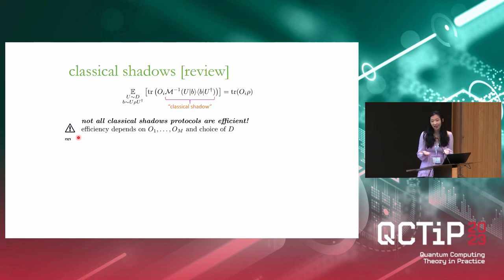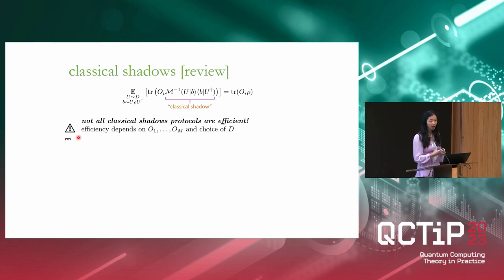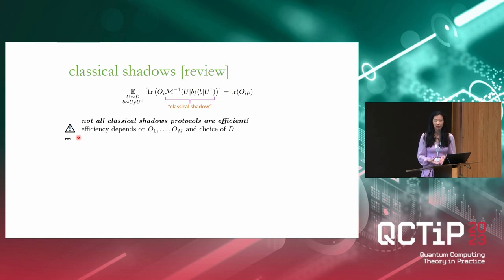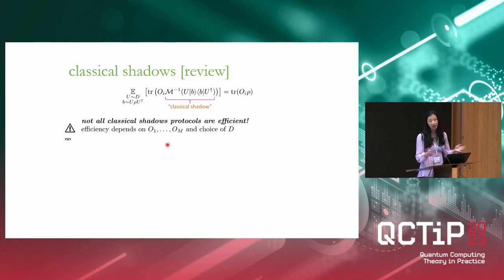That's the basic classical shadows framework — it's pretty straightforward, but of course it's not a silver bullet. In addition to the practical drawbacks that Richard pointed out yesterday for his particular distribution, there are also theoretical limitations: not all protocols derived from the classical shadows framework are actually going to be efficient. In particular, the efficiency of any given protocol depends both on the observables you want to measure and the distribution D you choose, and how these interact.